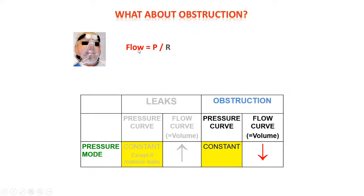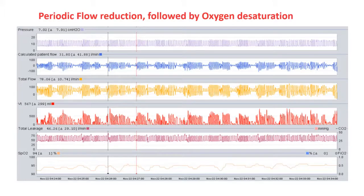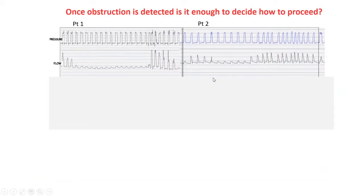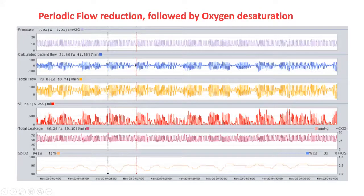What about obstruction? If we consider the same formula in the presence of upper airway obstruction, there is an abrupt increase in resistances. If the pressure is constant in pressure-targeted ventilation, the flow has to decrease. This is what happens and what we can see in detailed monitoring data. Looking at one night of this patient's data, you can see the total flow and patient flow abruptly and suddenly decrease, followed by oxygen desaturation — making it easy to identify upper airway obstruction.